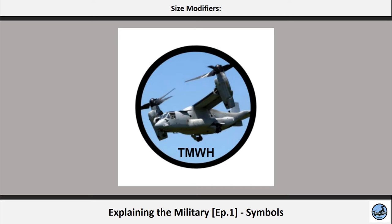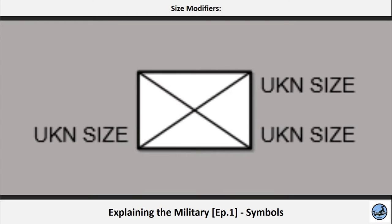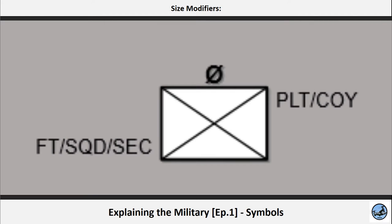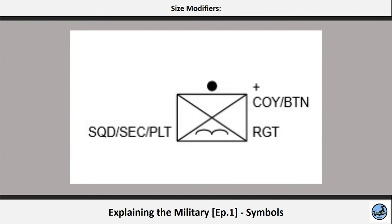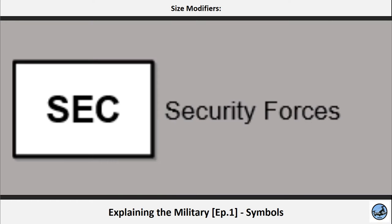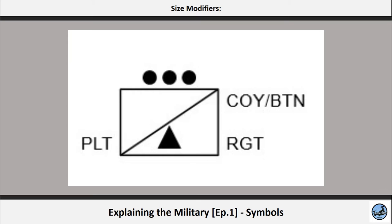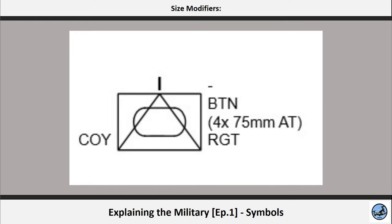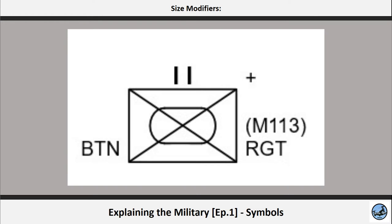Different unit sizes must be indicated with different symbols — enter the size modifiers. Nothing means unknown size. If the size is known or could be estimated, from smaller to biggest: a fireteam is a circle with a line crossed to it, abbreviation FT. A squad is a single dot, abbreviation SQD. A section is two dots, abbreviation SAC — pay attention not to confuse it with the SAC abbreviation in security territorial services. A platoon is three dots, abbreviation PLT. A company is a line, abbreviation COY. A battalion is two lines, abbreviation BTN.